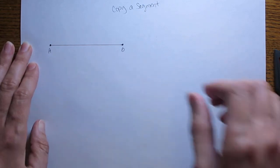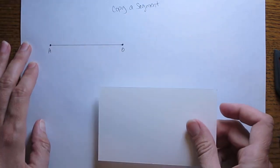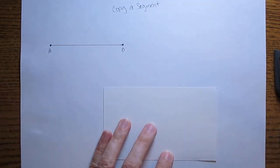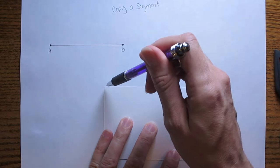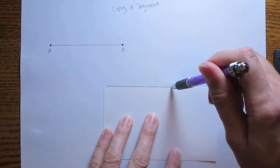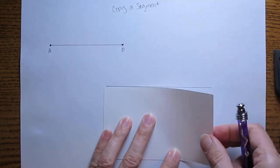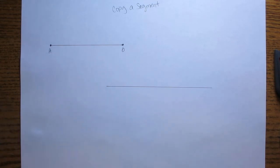So the way that we start is to use a straight edge. You can use the bottom of a protractor; I'm just going to use a note card. What we want to do is start by drawing a segment that's longer than our original. So just using a straight edge, draw a segment that is longer than your original.